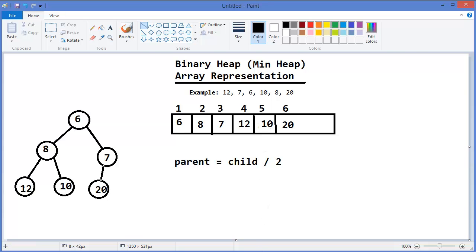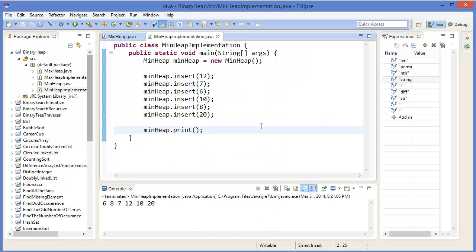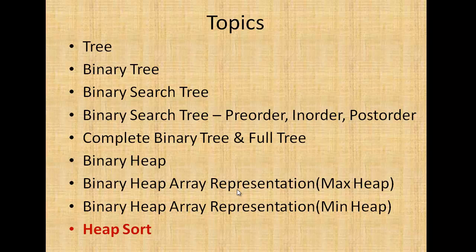Now run the project: 6, 8, 7, 12, 10, 20. So I can check 6, 8, 7, 12, 10, 20. So this is our min heap. I hope you enjoyed this lesson. In the next tutorial I'll show you the heap sort. Thank you very much for watching this tutorial. If you liked this tutorial, don't forget to subscribe to this channel. If you have any comments, please comment in the comment box and share this video. See you soon in the next tutorial. Till then, bye bye.